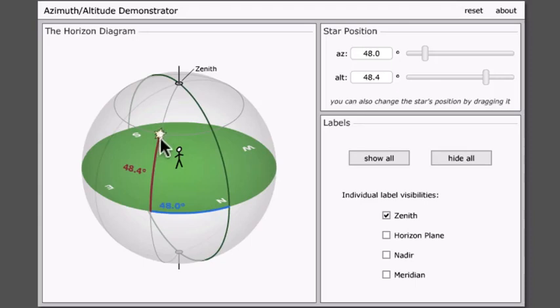To describe where a star is, he will describe how high it is above his horizon. That's called the star's altitude. Here's a star at an altitude of 30 degrees, and here's a star at an altitude of 43 degrees.